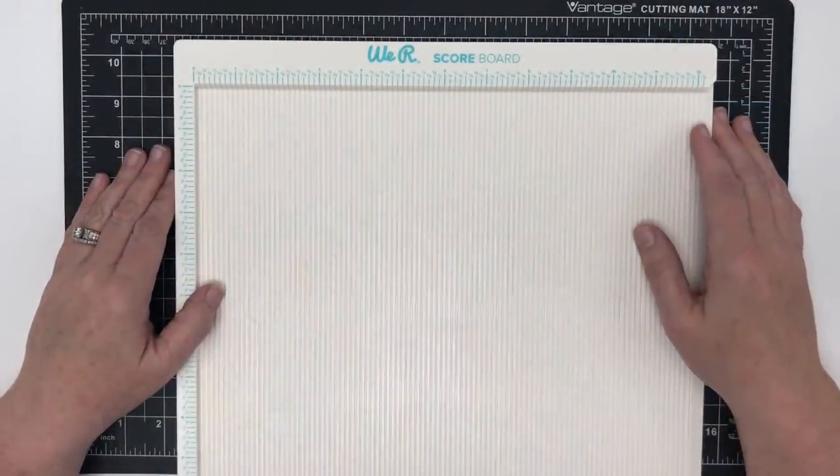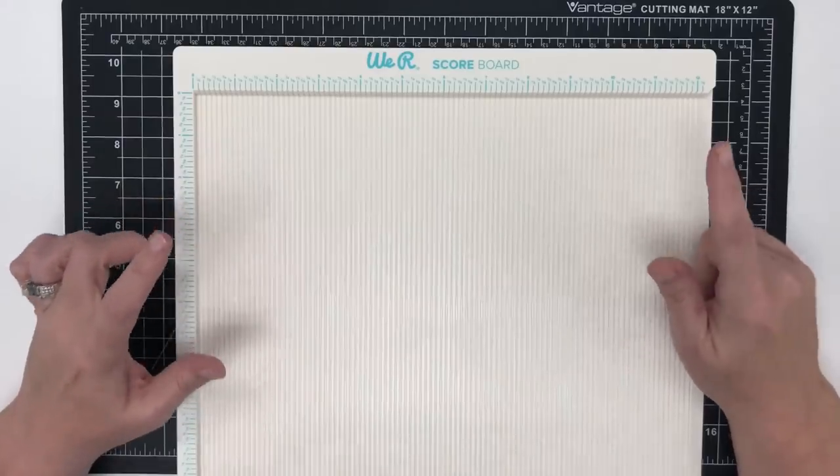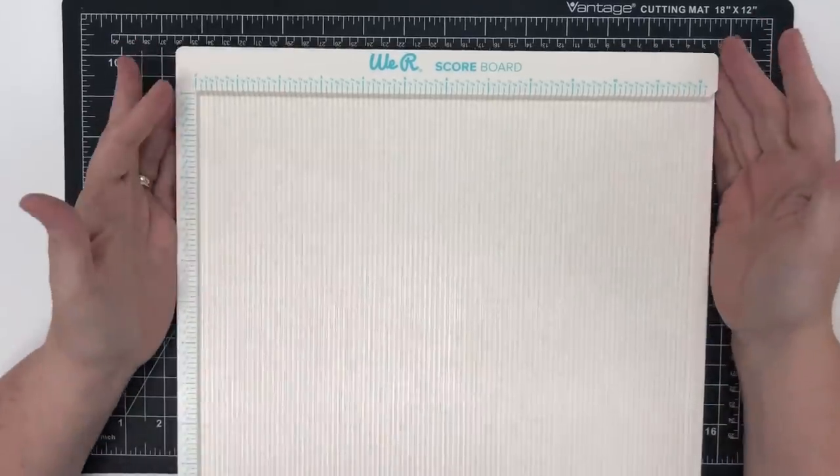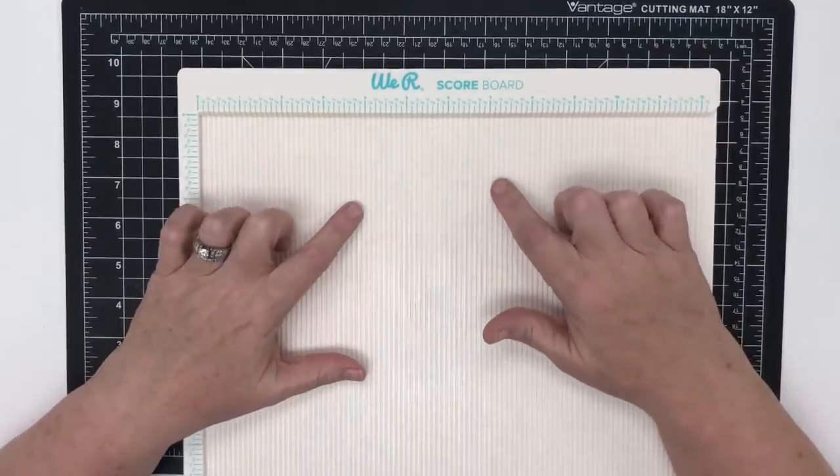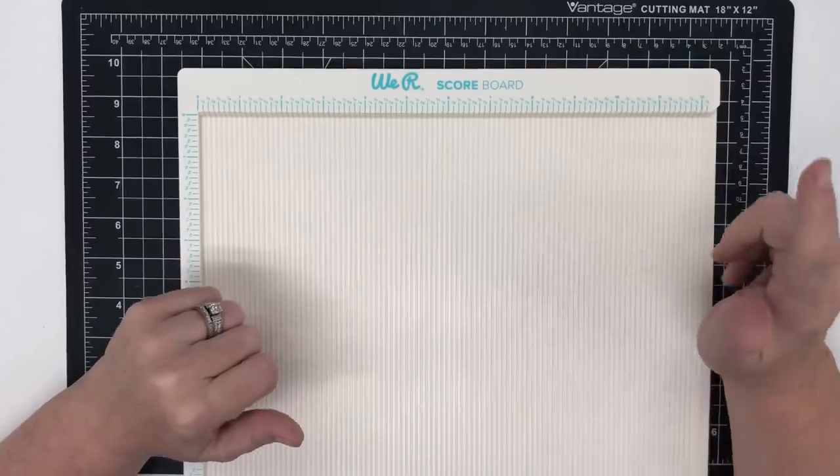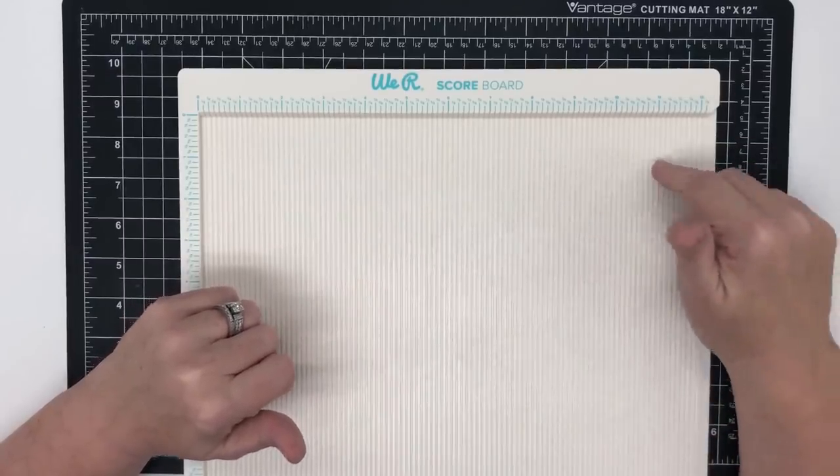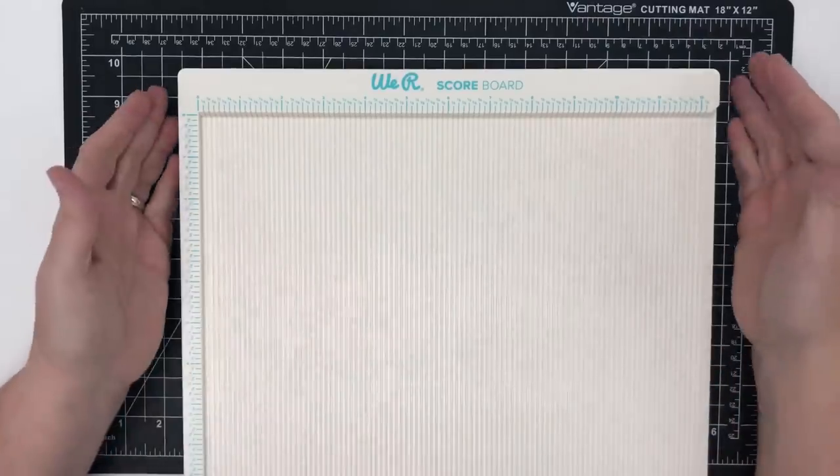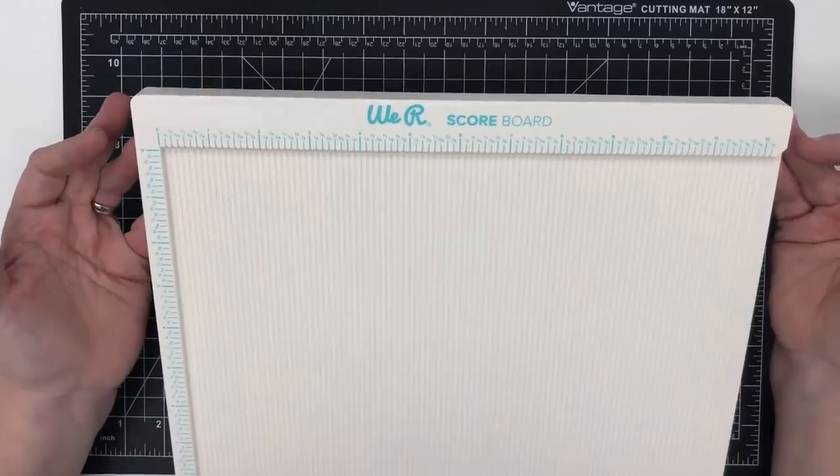Hey guys, it's Meh Meh and today on Product Parade, we're going to be looking at the We Are Scoreboard. Now we already carry a scoreboard in the store and it is slightly less expensive than this guy, but this one does something that you might really like. If you have never purchased a scoreboard, if you're in the market to upgrade your scoreboard, or if you just want to have another tool in your stash and you're a fan of We Are, this might be the one for you.